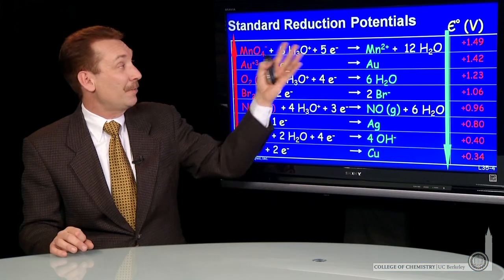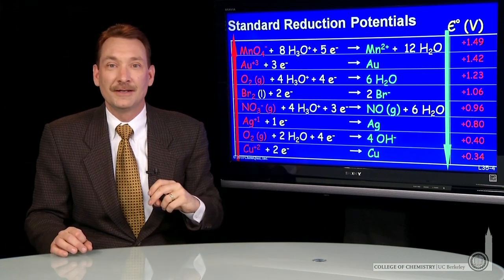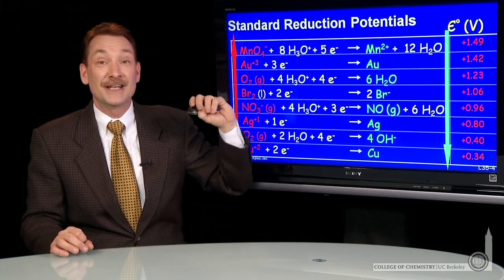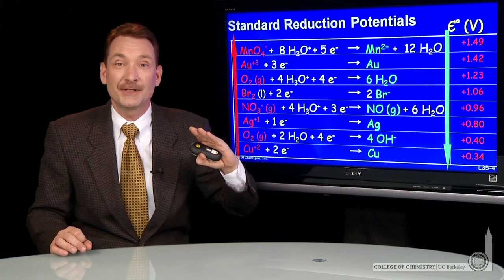We can look at the top one. Here's permanganate being reduced. Now, when permanganate is reduced, that has a high reduction potential.